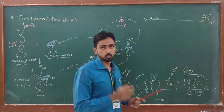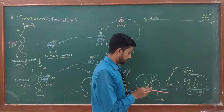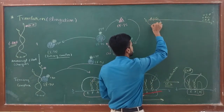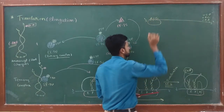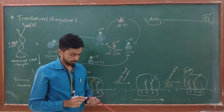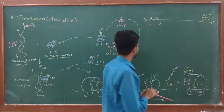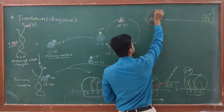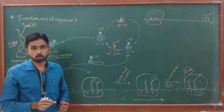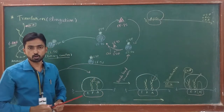Initially, the ribosome small subunit recognizes the start codon and gets attached to the mRNA. The small subunit of the prokaryotic ribosome is the 30S type. The large subunit then gets attached to the small subunit at the start codon, which completes the formation of the 70S initiation complex.